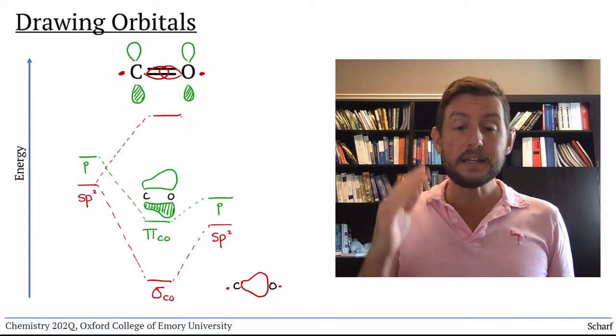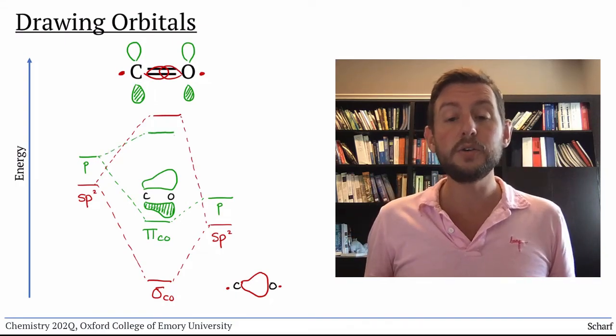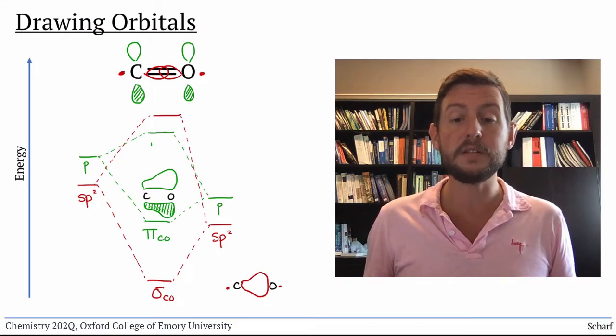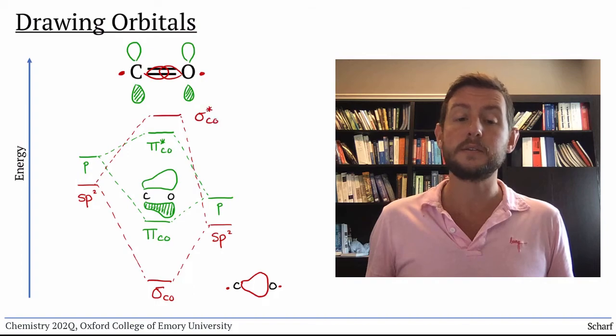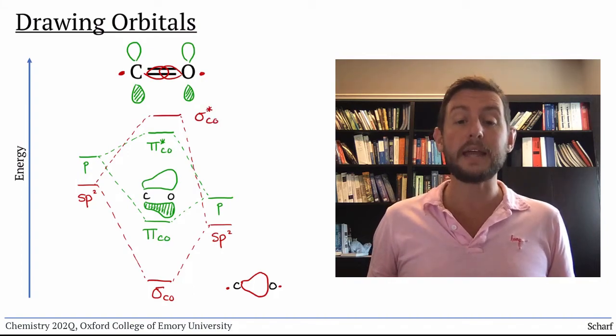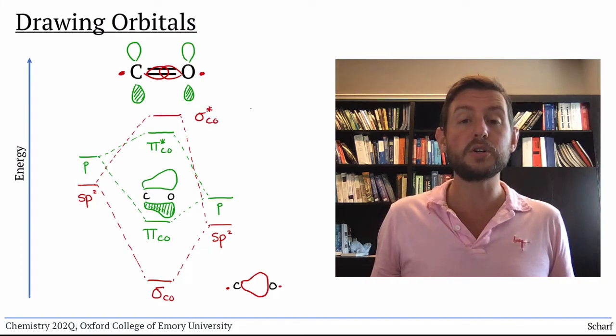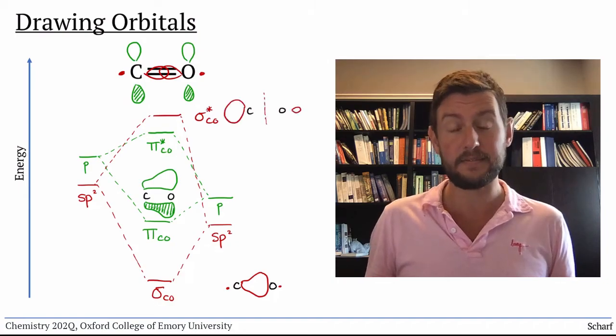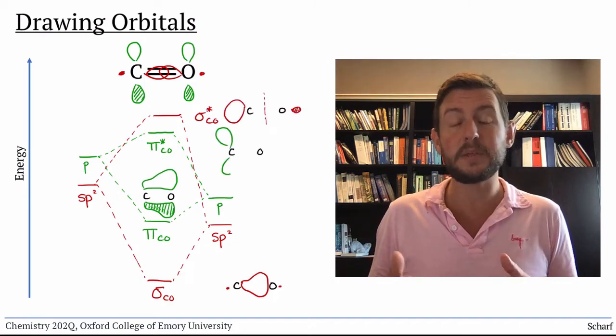Similarly, the antibonding orbitals are closer in energy to carbon's orbitals than to oxygen's. This means that the antibonding orbitals are larger on the less electronegative atom. They look something like this.